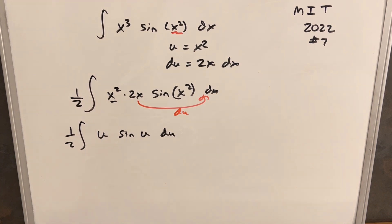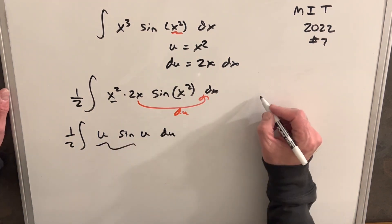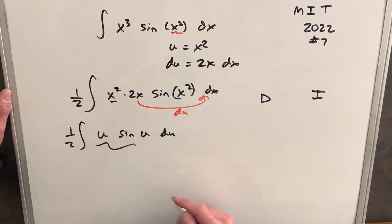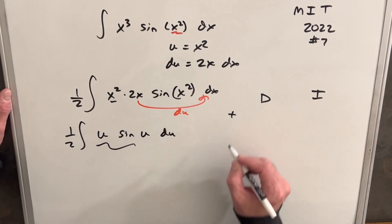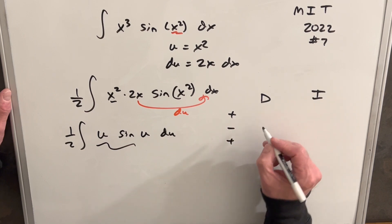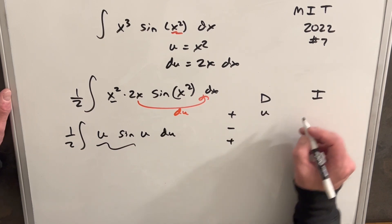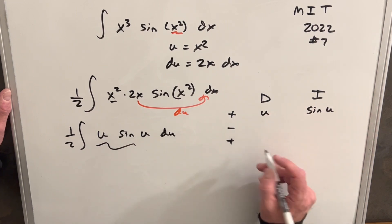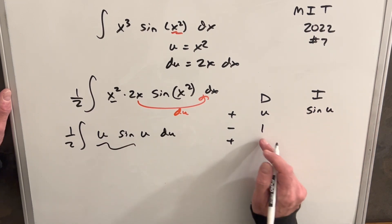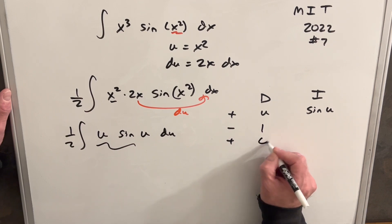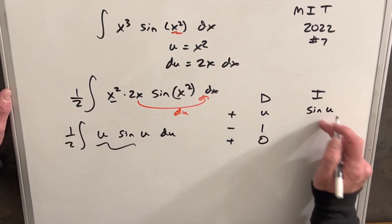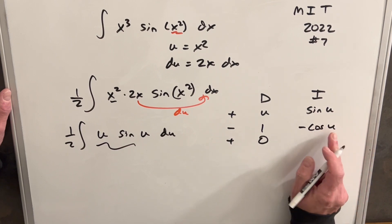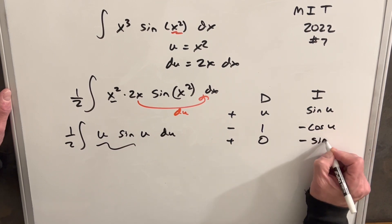This is nice because we can solve this with integration by parts. We'll do a quick DI method — differentiate and integrate — also called tabular integration. We're going to differentiate u and integrate sine u, since this will reduce to zero. Differentiating u gives 1, and the derivative of 1 is 0. Integrating sine u gives minus cosine u, and integrating minus cosine u gives minus sine u.